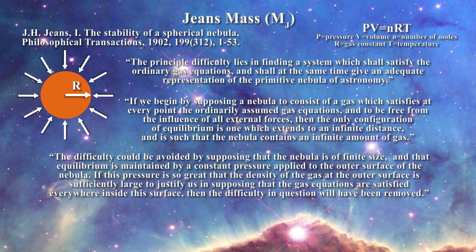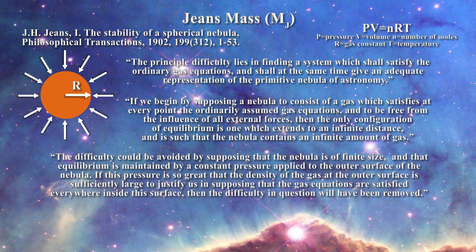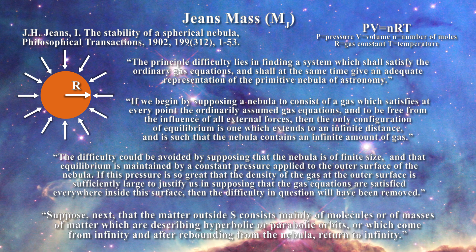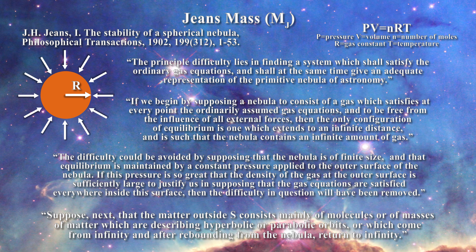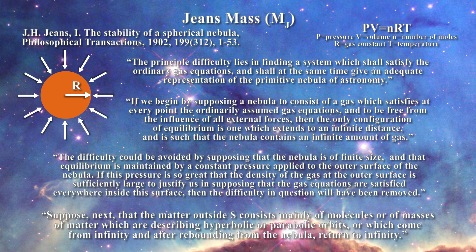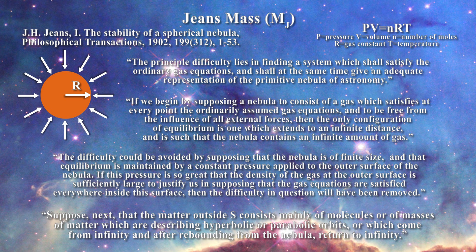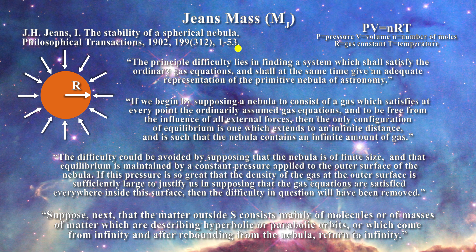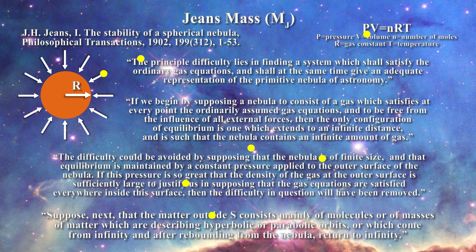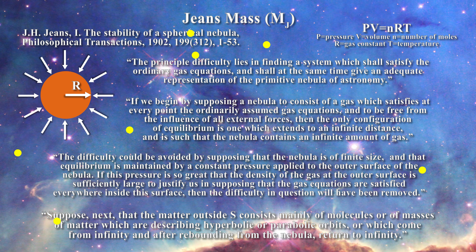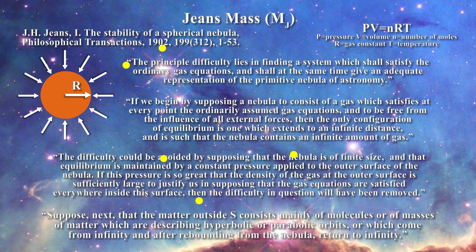The outer pressure Jeans required would come from molecules or meteorites. Here is an example of how far he reaches: Suppose next that the matter outside S, which is the surface, consists mainly of molecules or of masses of matter which are describing hyperbolic or parabolic orbits, or which come from infinity and after rebounding from the nebula return to infinity.